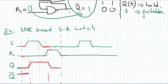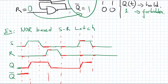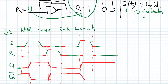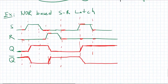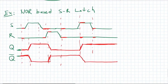I keep Q at 0. Then R=0 and S=0 — this is a hold state, so I hold Q at 0. Then S becomes 1 and R=0, so I set Q to 1 and keep it there. After that, both S and R return to 0, so I keep Q=1. That gives us the complete timing for Q. For Q-NOT, we simply invert Q: it starts at 1, drops to 0 when Q is set, rises back to 1 when Q is reset, and drops again when Q is set again.